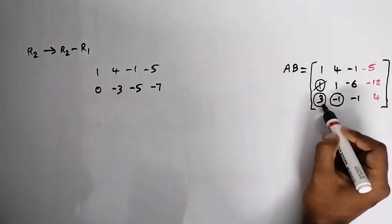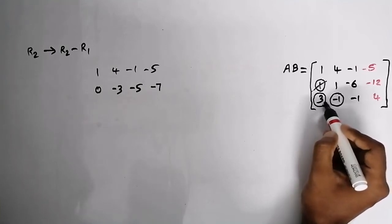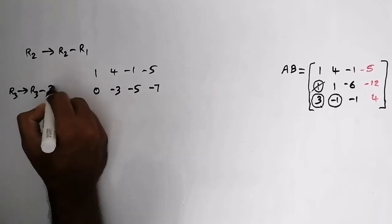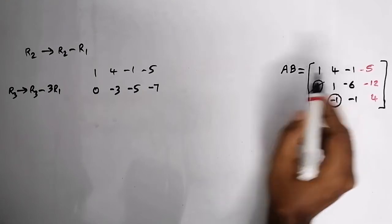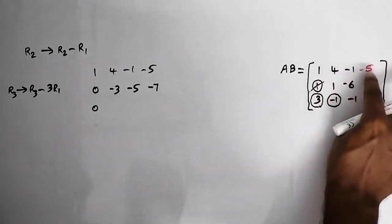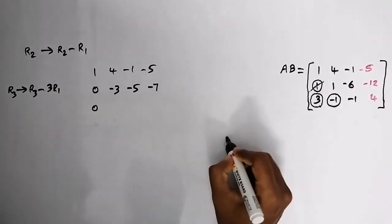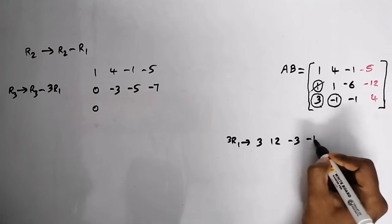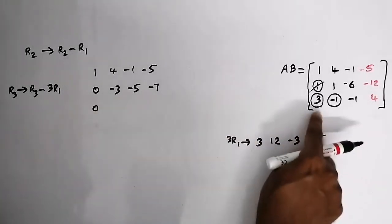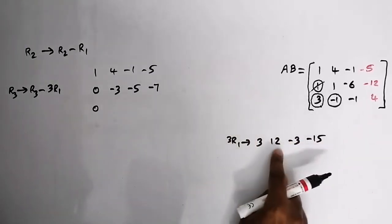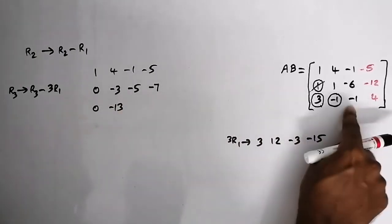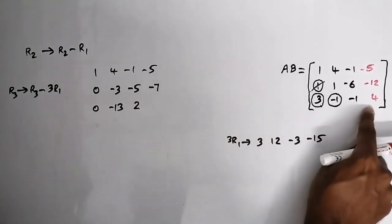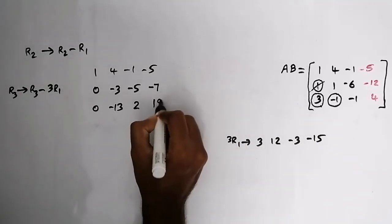The next process is to make the 3 in row 3 column 1 equal to zero. We perform the row operation R3 becomes R3 minus 3R1. So 3 minus 3 equals 0. Multiplying R1 by 3 gives: 3, 12, minus 3, minus 15. Then R3 minus 3R1 gives: 0, minus 1 minus 12 equals minus 13, minus 1 minus (minus 3) equals plus 2, and 4 minus (minus 15) equals plus 19.